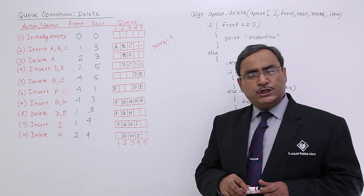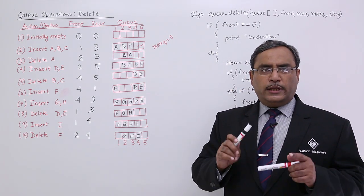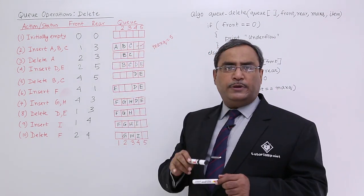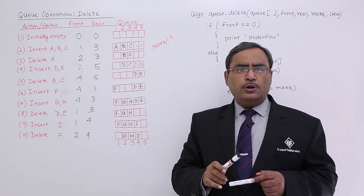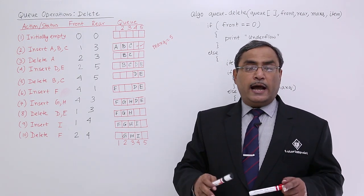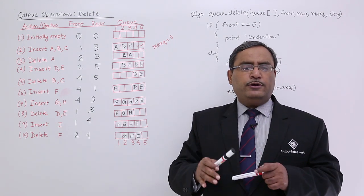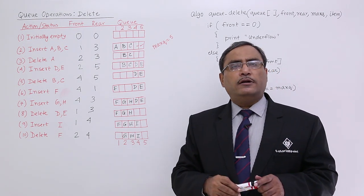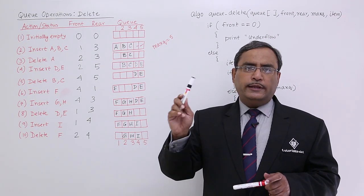We know that deletion will take place only from the front end. If front is equal to 0, that means the queue is empty. I need not check whether rear is equal to 0 or not, because if front is equal to 0, that will indicate the queue is empty. Whenever data is not there but a deletion operation is attempted, that situation is known as underflow. So the check for underflow is: if front is equal to 0, then it is underflow.